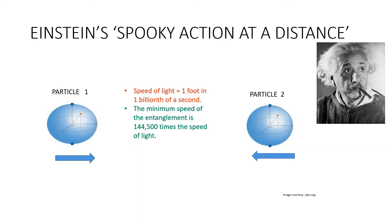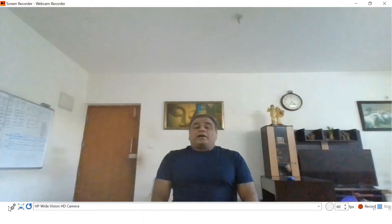Albert Einstein dismissed quantum entanglement as spooky action at a distance. Over the past few decades, however, physicists have demonstrated the reality of spooky action over ever greater distances, even from Earth to satellites in space. The minimum speed of the entanglement is 144,500 times the speed of light.